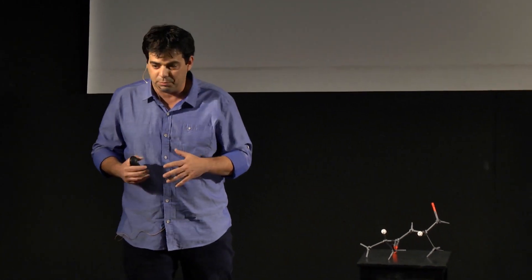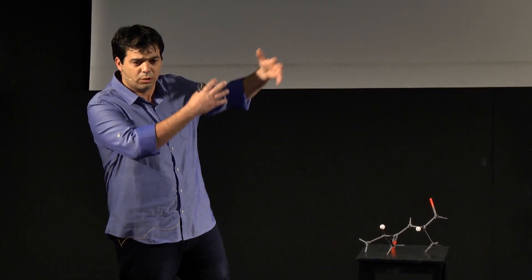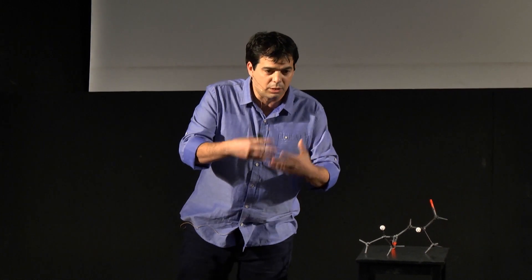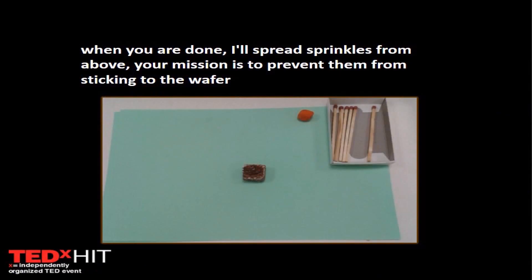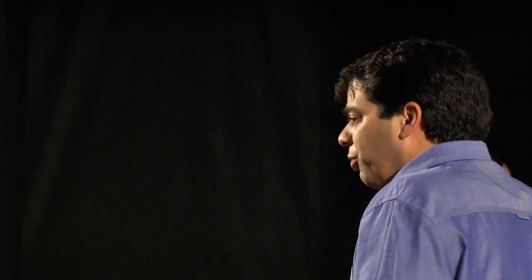And then I asked myself, how can we add some degrees of freedom to this task? In order to do so, I reformulated the task. Instead of telling them 'please build a structure that will protect the wafer,' I just told them: 'When you're done, I'll spread some sprinkles from above. Your mission is to prevent these sprinkles from sticking to the wafer.' Now I didn't limit them to solving the problem by building any structure. Moreover, I didn't even mention what resources were available — I assumed they could see them by themselves.